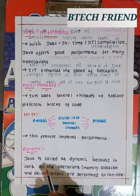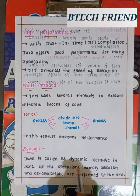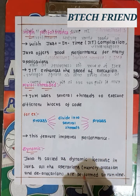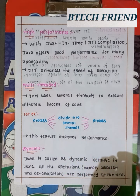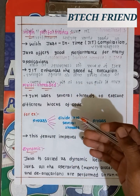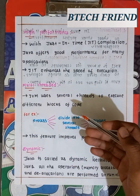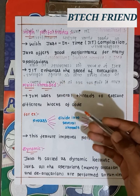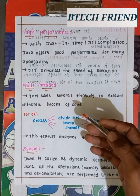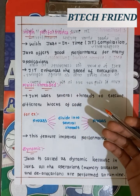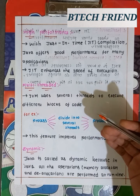The next feature is dynamic. Java is called a dynamic language because in Java, all operations — memory allocation and deallocation — are performed at runtime.